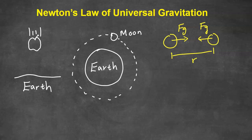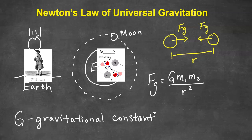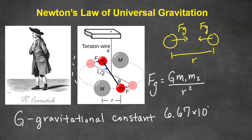The equation is Fg (gravitational force) equals big G, the gravitational constant, times M1 times M2 — the masses of the two objects — divided by the distance between them squared. The gravitational constant G was measured in 1798 by Henry Cavendish using a torsion balance, and he found it to be 6.67 times 10 to the negative 11 Newton meter squared per kilogram squared.